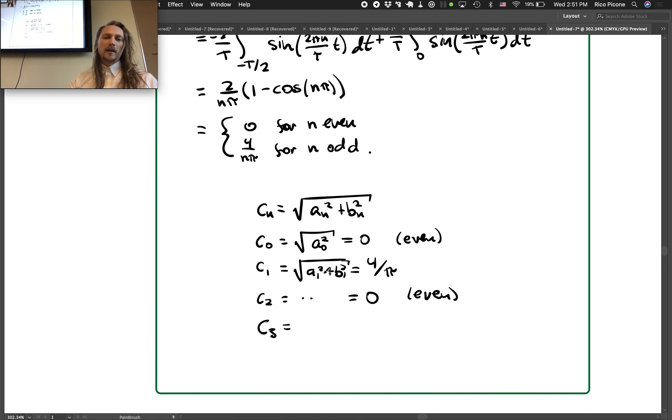We should probably simplify this. So it would be 2 over n pi squared so it would just be 4 over n pi. So it's always 4 over n pi for n odd and so in this case it would be 4 over 3 pi.